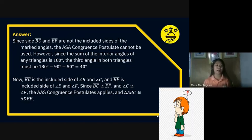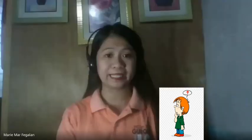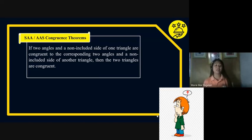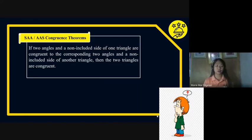Therefore, triangle ABC is congruent to triangle DEF, proven by the AAS congruent postulate. AAS, or angle-angle-side congruent theorem, states: if two angles and the non-included side of one triangle are congruent to the corresponding two angles and non-included side of the other triangle, then the two triangles are congruent. The given side must correspond to the two given angles. That is the AAS congruence theorem, also called the SAA congruence theorem.